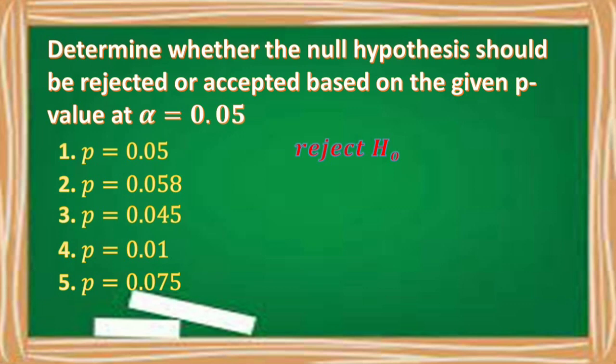We have to accept the null hypothesis for number two because our p-value is greater than the alpha level. Number three: our p-value is equal to 0.045. The decision is to reject the null hypothesis because our p-value is less than the alpha level.